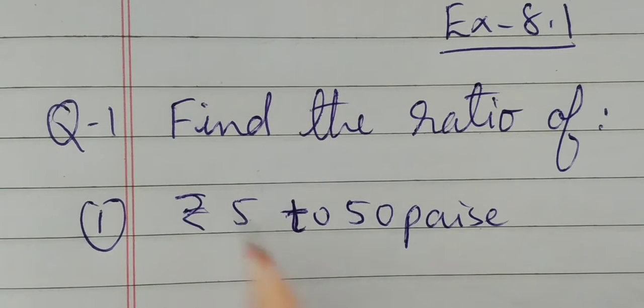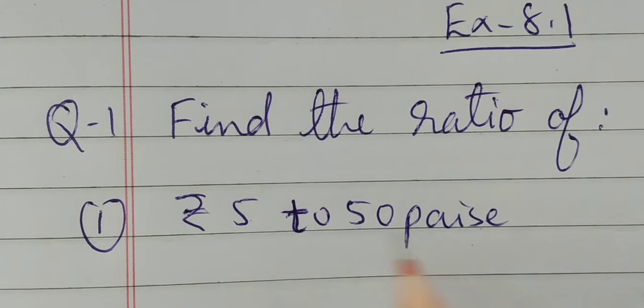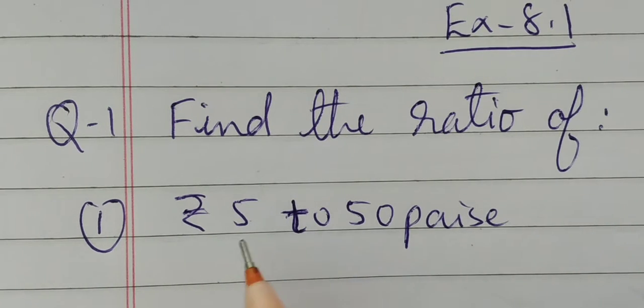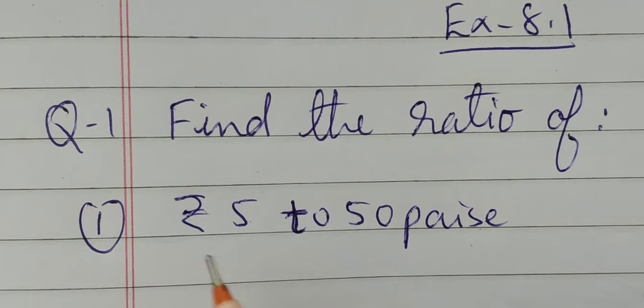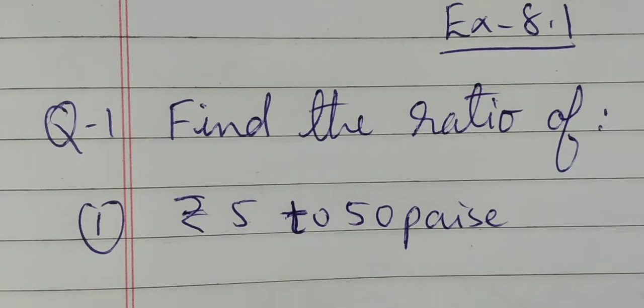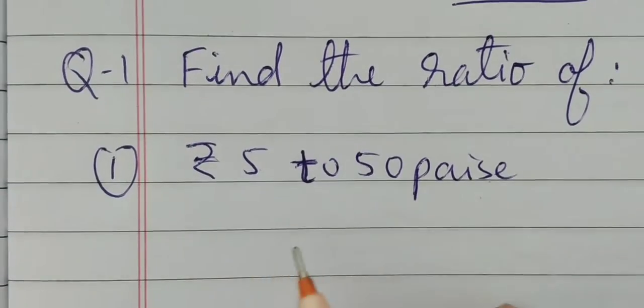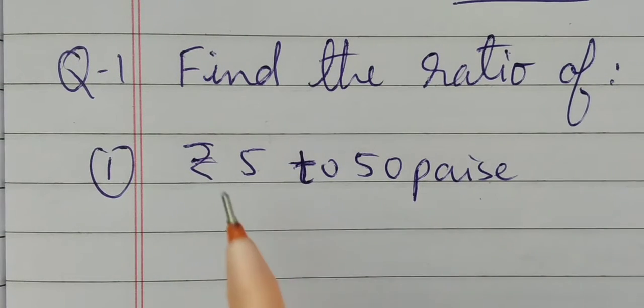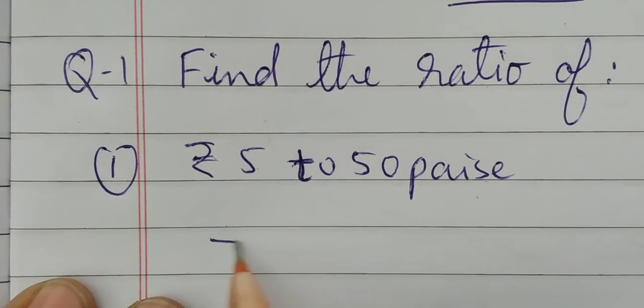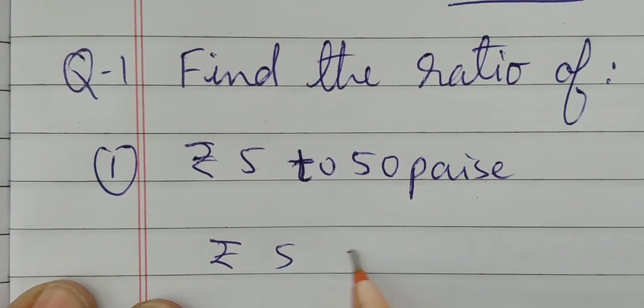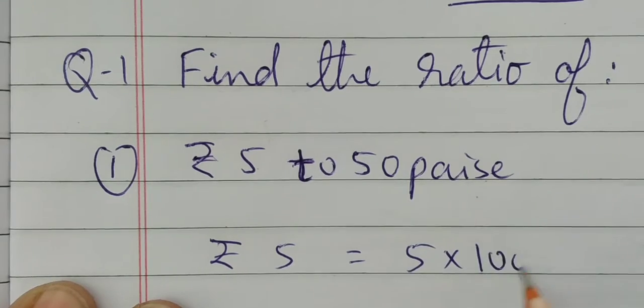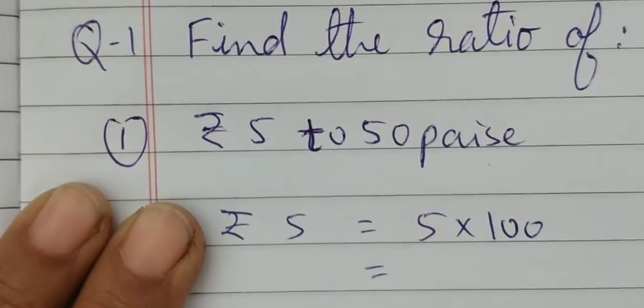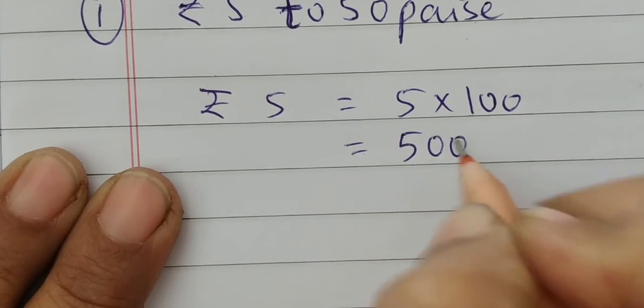One is in rupees, the other is in paise. They belong to one family - rupees and paise. Here the conversion is possible. If it was rupees with kilometer, then no way you cannot find the ratio. But here, as rupees and paise belong to the same family, you can convert. I will convert rupees into paise. 5 rupees equals 5 multiplied by 100, that's equal to 500 paise.